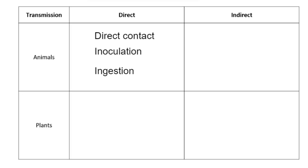For indirect transmission in animals, there are also three ways this could happen. First is fomites — inanimate objects that an infected individual comes into contact with, which then transmit the pathogen to a healthy individual who uses the same object. For example, someone coughs or sneezes into their hand, doesn't clean it, and opens a door handle; another person grabs the handle and then touches their eyes or mouth. Another example is someone with athlete's foot sharing flip-flops without cleaning them in between.